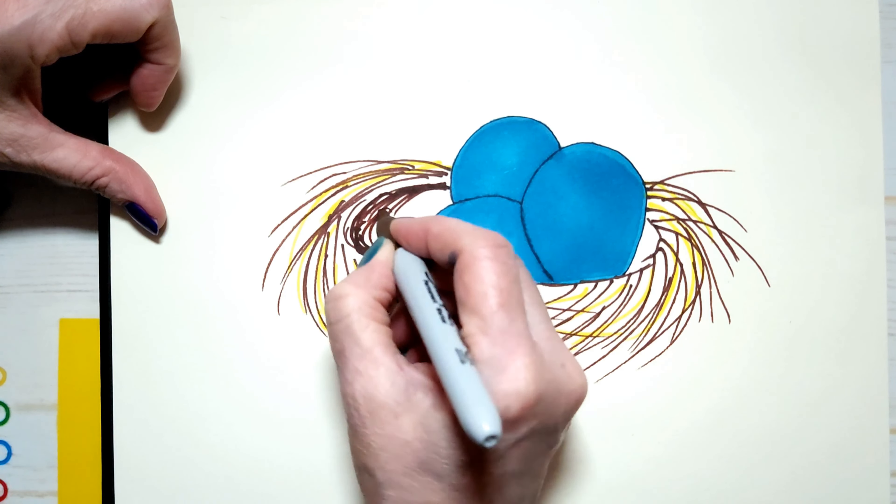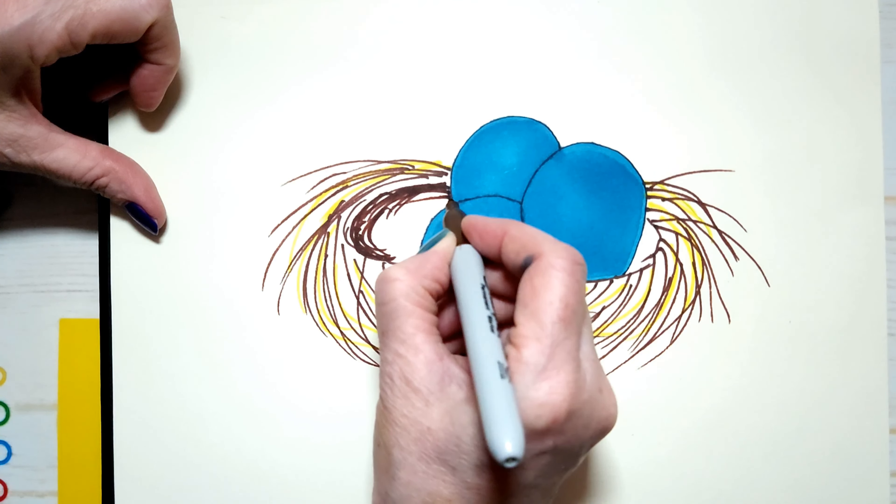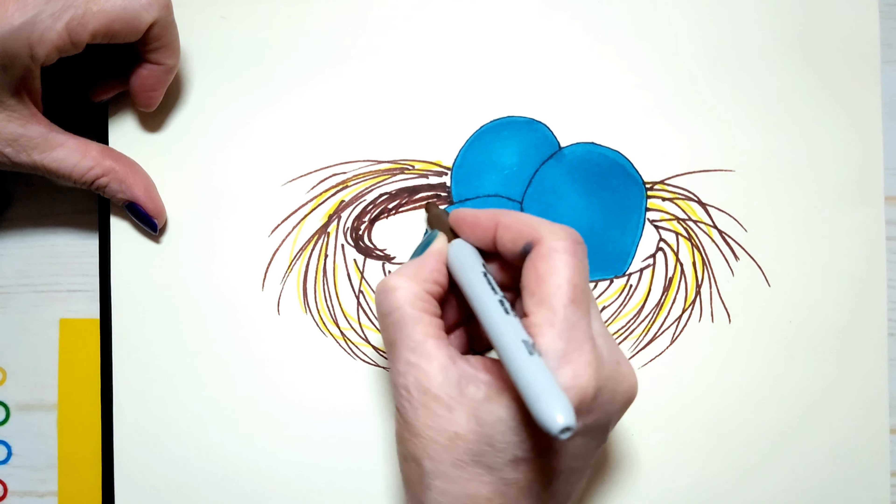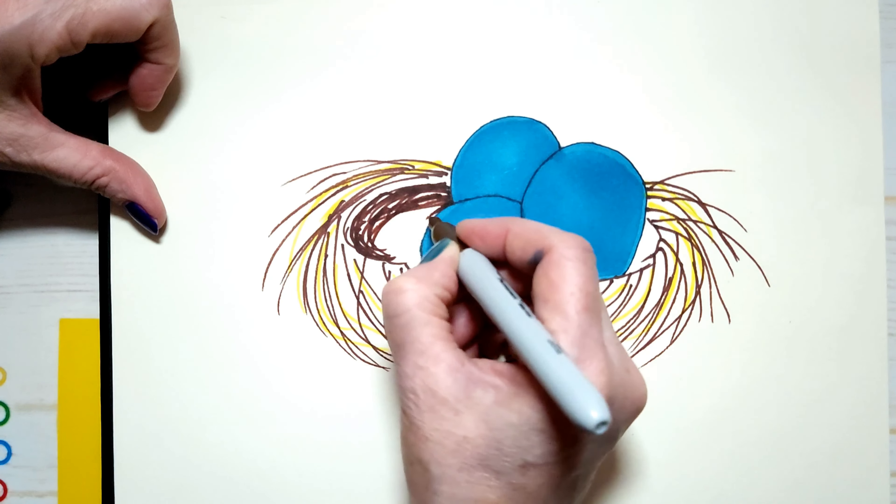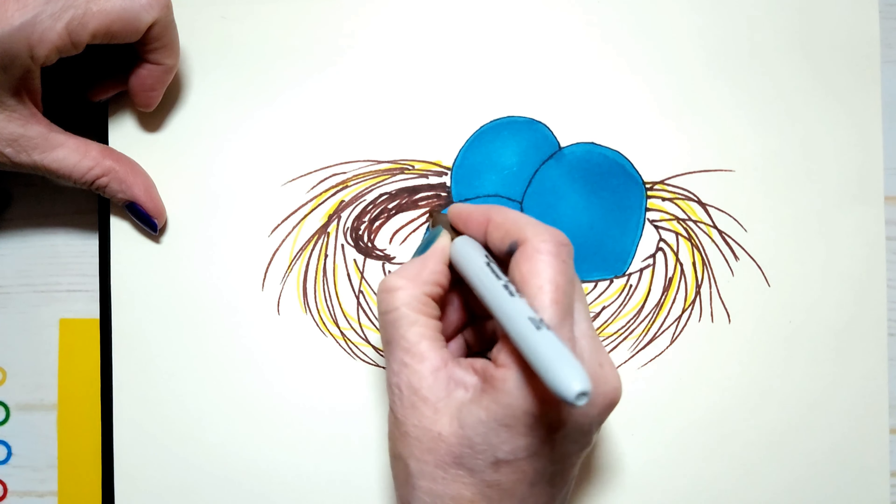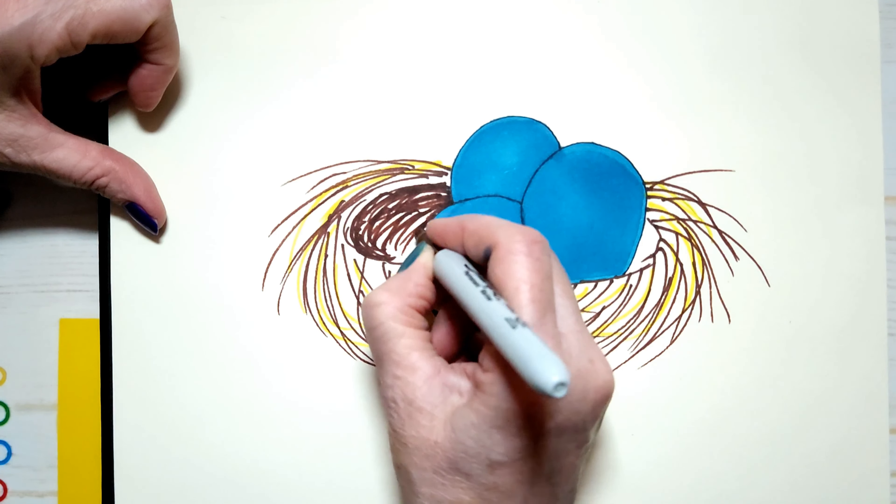Because the inside of the nest is a little darker, because the eggs are causing a shadow on the inside there, right? I'm just trying to be really careful. I don't want to get any brown into my egg here.